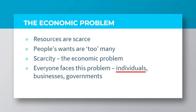Individuals have many wants that they want to satisfy, ranging from necessities like food, clothing, and shelter, to luxuries like vehicles, golden watches and others.